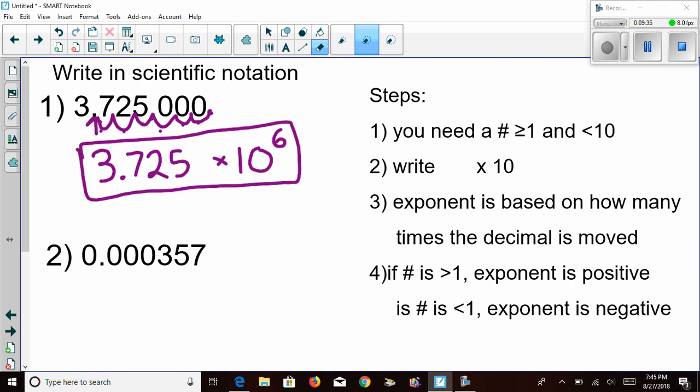Let's take a look at another example. This time, I'm dealing with a number that is significantly less than one. And I still want to move the decimal so that it has a number that is greater than or equal to one and less than 10. To do that, I'm going to move the decimal into this spot, giving me the number 3.57. That number is both greater than or equal to one and less than 10.